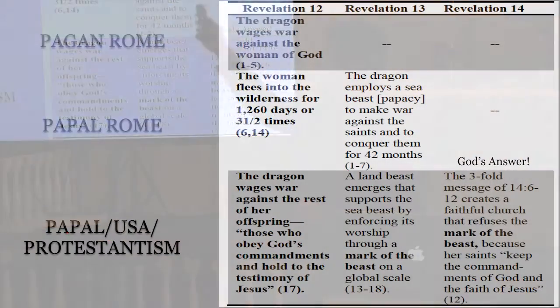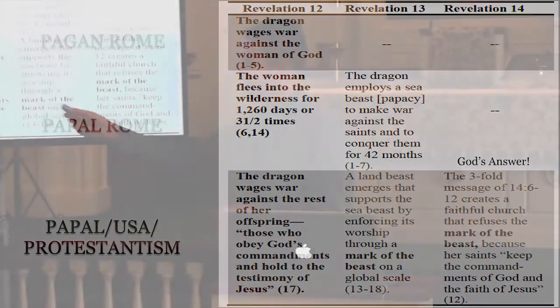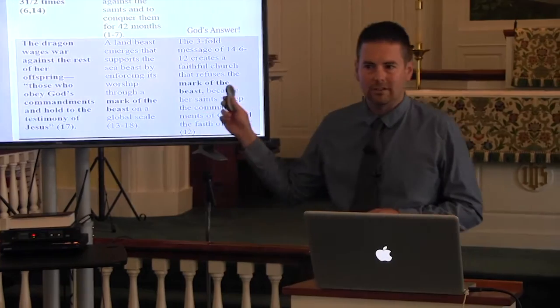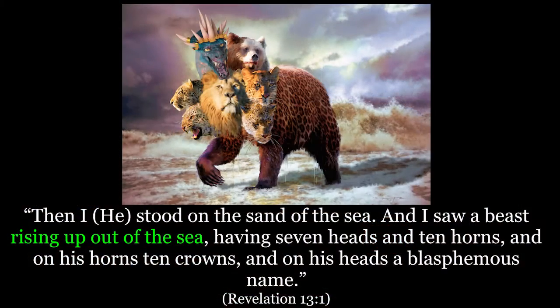We see the same thing as we'll branch into Revelation 13. We see the dragon employing that sea beast, which is the papacy. And then eventually that threefold union emerges in the land beast that we will study next time. And what's really exciting — I can't wait to get to Revelation chapter 14 — because here is God's answer to these deceptions in Revelation 12 and 13. It's the three angels' messages that must go to the whole world. Let's jump into Revelation 13 verse 1.